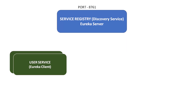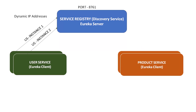Next, assume there is a Eureka client. The Eureka client service name is called user service. Now there are two instances of user services running. Those two instances should register with the Eureka server. The user service instances are running on dynamic IP addresses and are registered with the Eureka server.